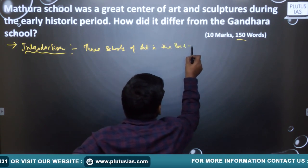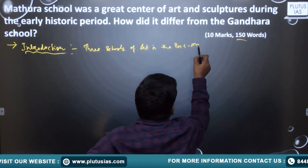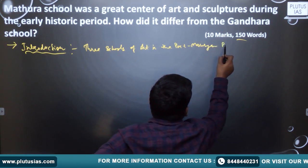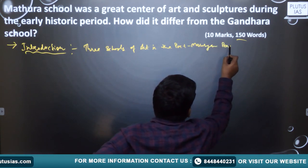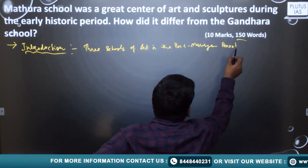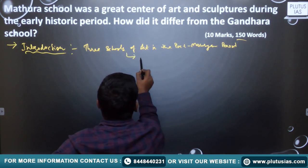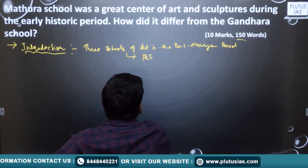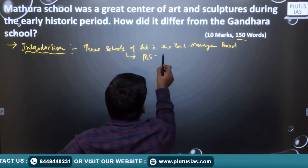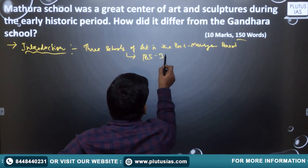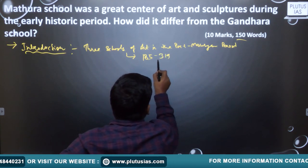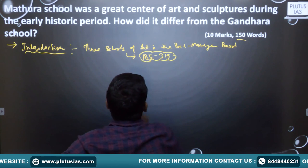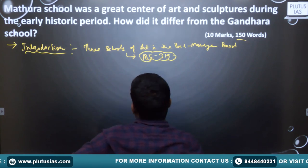What is the post-Mauryan period? This post-Mauryan period starts after 185 BC when the Mauryan empire declined, till the foundation of the Gupta empire.